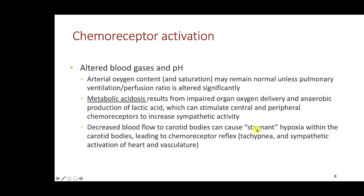The carotid bodies — the peripheral arterial chemoreceptors — have a very high flow rate per gram weight of tissue, giving them very high oxygen delivery. When blood pressure is reduced, flow through the carotid bodies is reduced, decreasing oxygen delivery to those cells. Even if arterial oxygen content is normal, the decreased flow means decreased oxygen delivery within the carotid bodies, leading to hypoxia — or stagnant hypoxia — because of reduced flow. This leads to a chemoreceptor reflex that produces increased respiratory rate and sympathetic activation of the heart and vasculature.